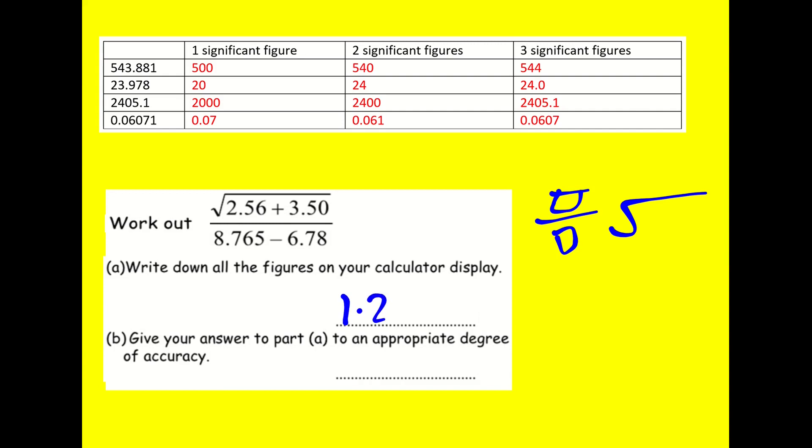Write down all the figures on your calculator display. I get 1.240154. Do you know what? I'm going to stop there. The examiner I'm talking about here doesn't know how many figures on my calculator display. As long as I'm showing a reasonable number. Some calculators will show about 50 digits and they don't actually want you to write down 50 digits. So I'm OK with that.